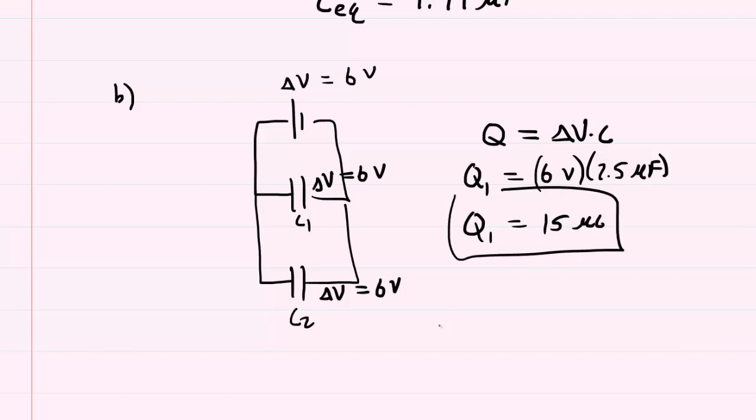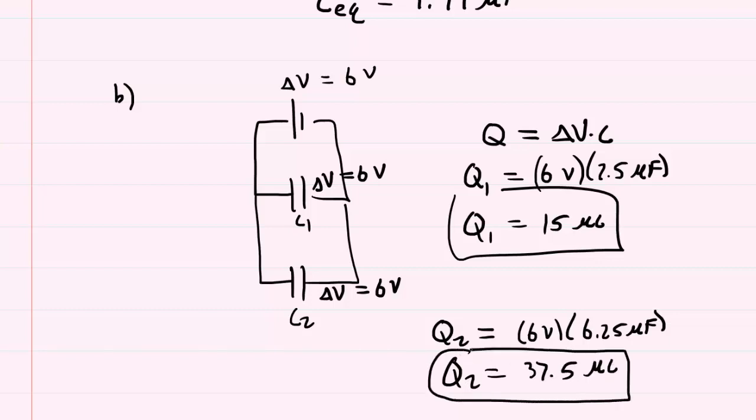And then same kind of idea for the other capacitor. We can call this Q2. This will equal the potential difference of 6 volts times the capacitance of 6.25 microfarads. And when we multiply these together, we're going to get 37.5 microcoulombs for the charge on the second capacitor of part B.